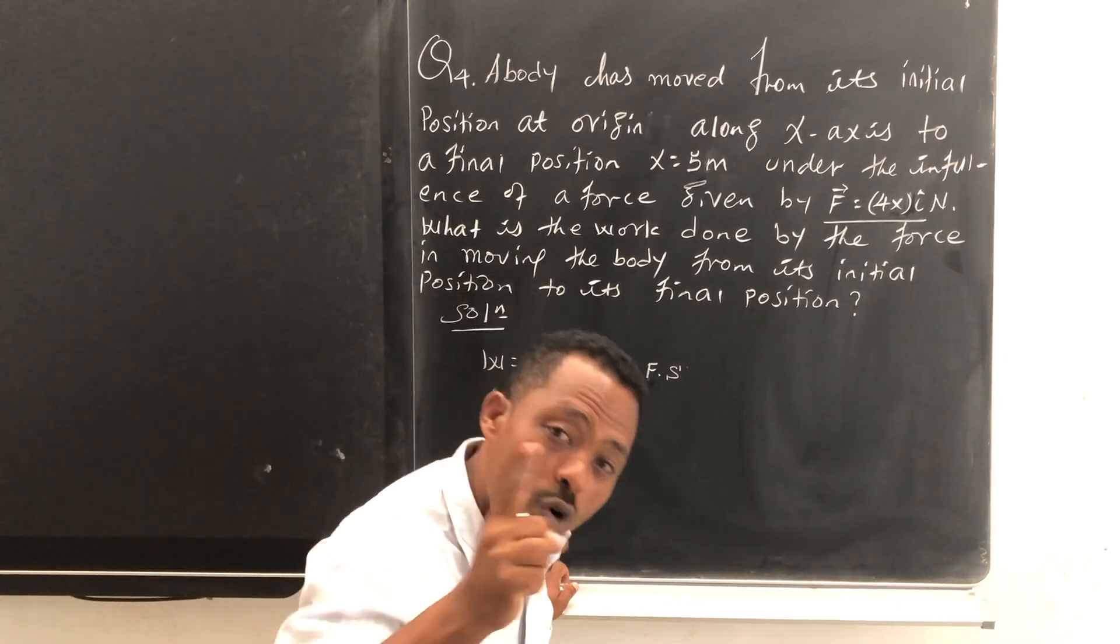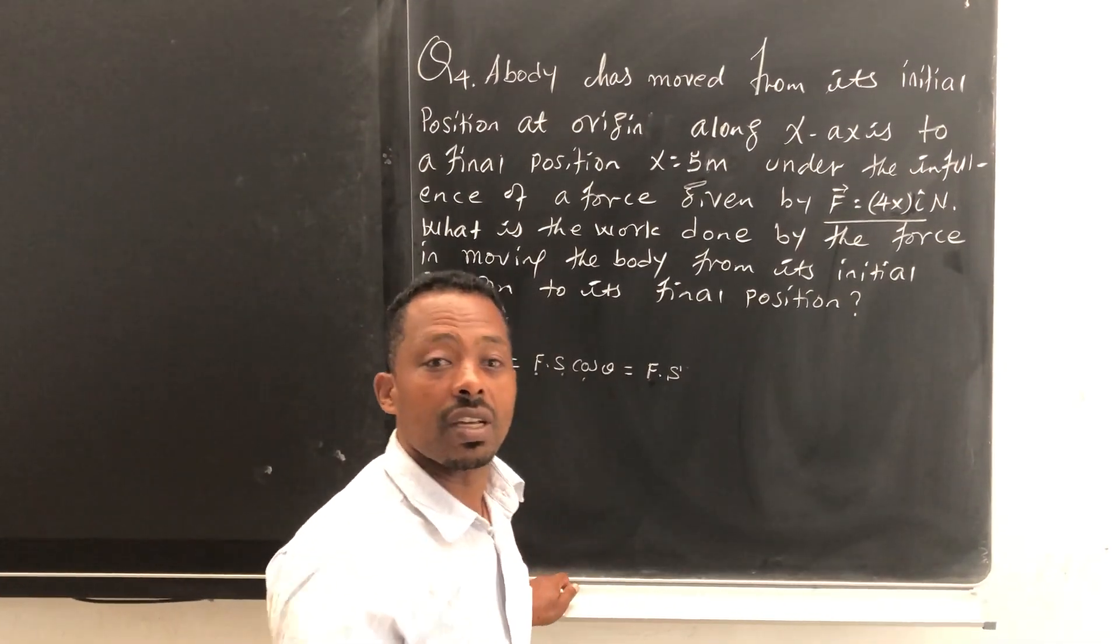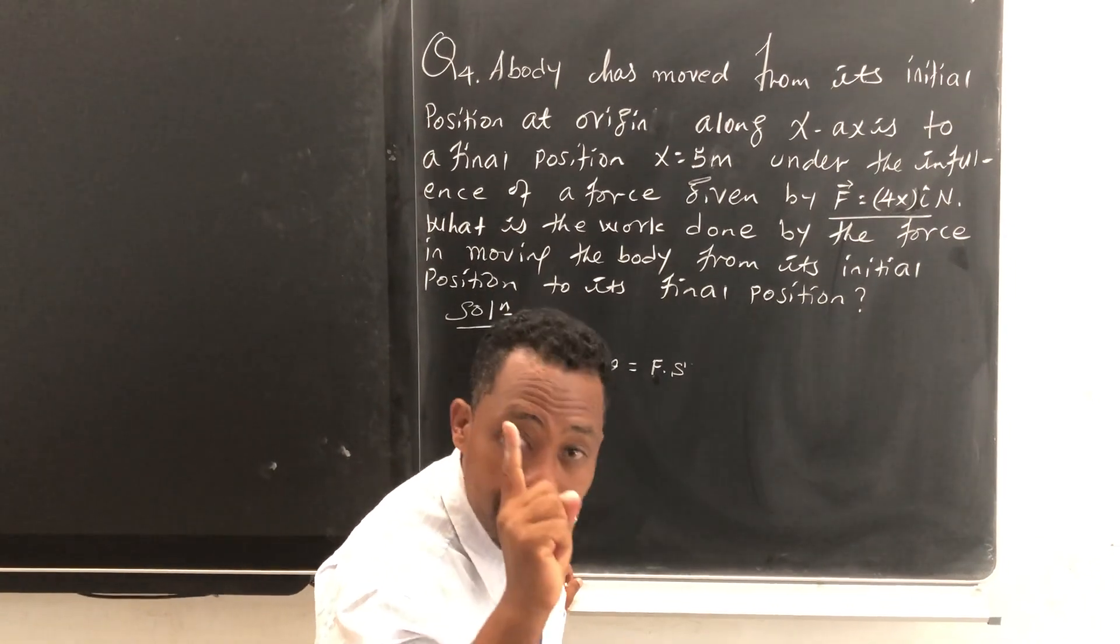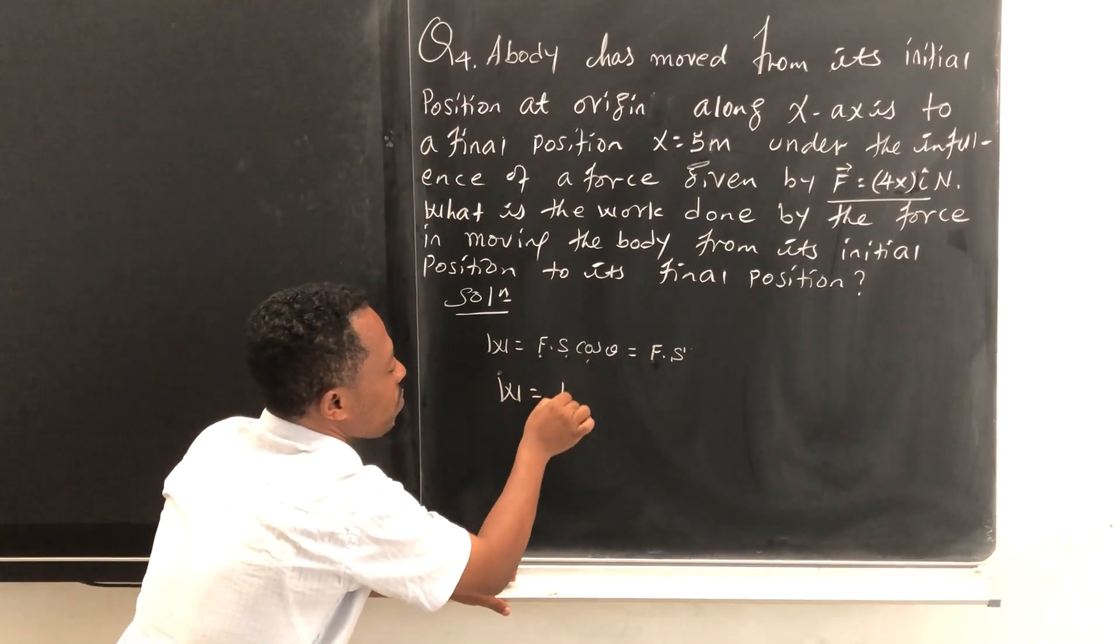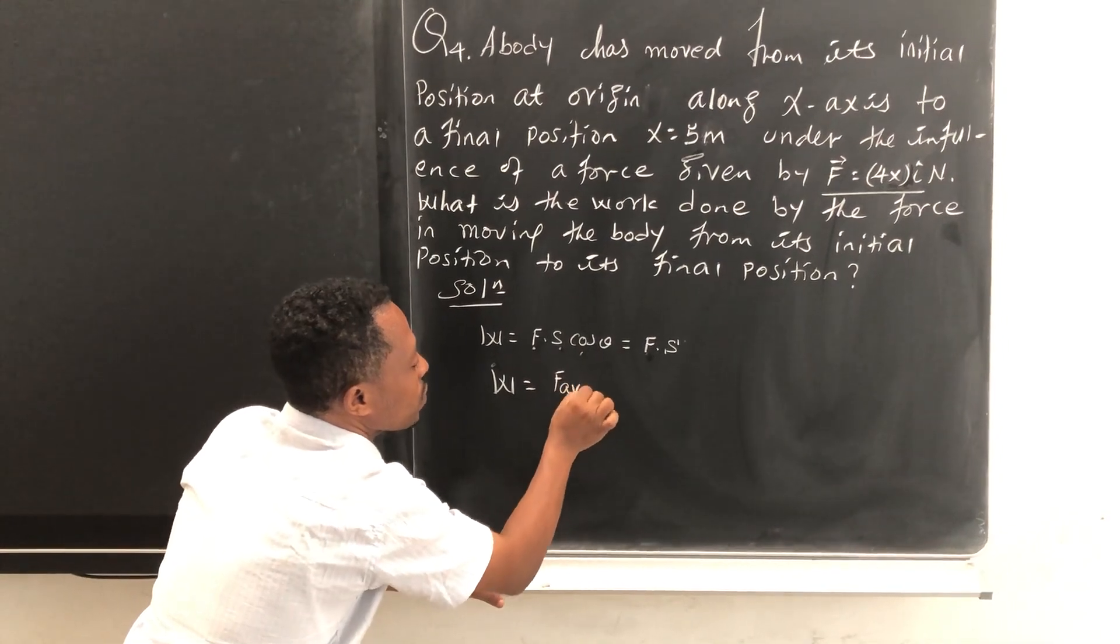And here's what you have to do: W equals F average dot X.